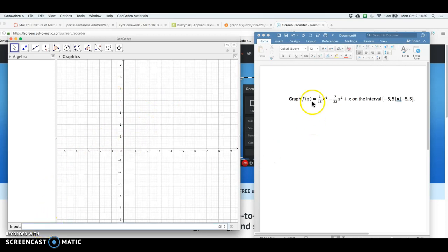So now I want to graph this in the input bar at the very bottom. I'm going to type f of x equals, and I could do x to the 4th over 15, and then minus 7 times x cubed over 20 plus x.